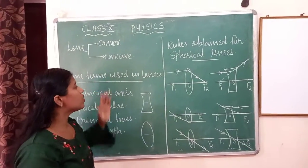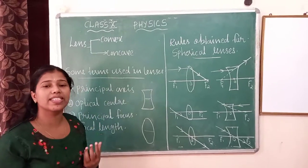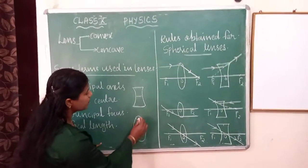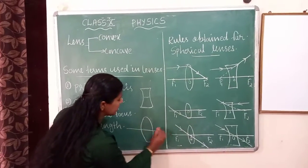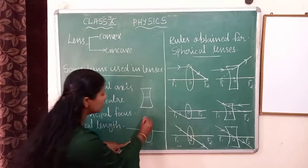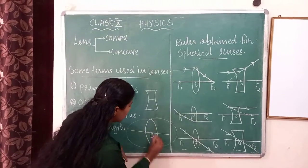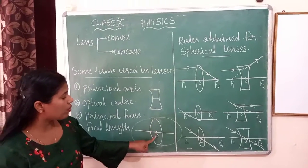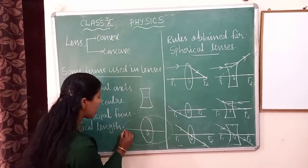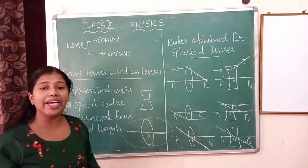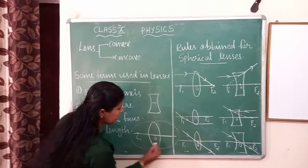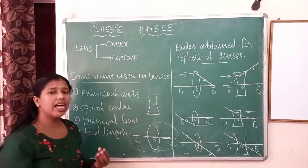Next are some terms used in lenses. First one is principal axis, which we already discussed in case of mirrors. The center of the lens is the optical center, denoted as O. On each side of the lens, we get a center of curvature — C1 on one side and C2 on the other. The line passing through the optical center is called the principal axis.